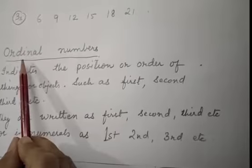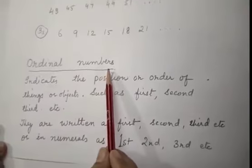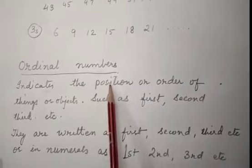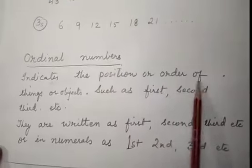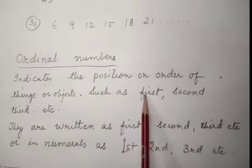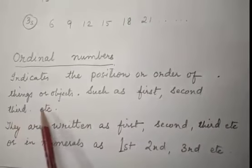Let us start the next topic. Ordinal numbers. What is ordinal numbers? Ordinal numbers indicates the position or order of things or objects such as first, second, third, etc.